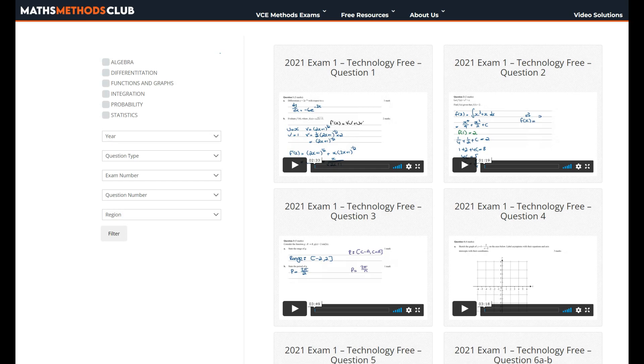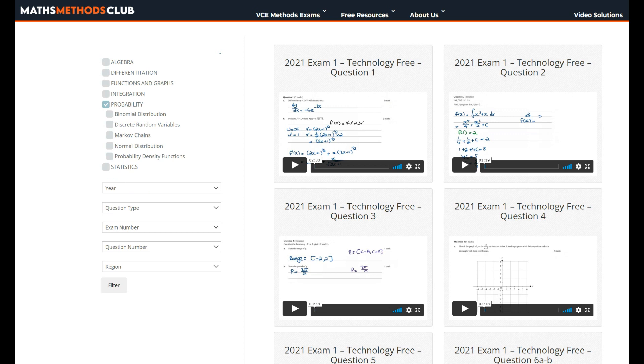All you need to do is, from the main topic, select probability, and then from the subtopic, select probability density functions. And if you want to learn or practice tech-free questions, go to question type and select tech-free, and then click on filter.